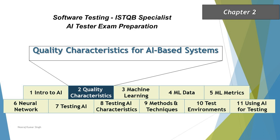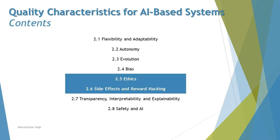Hello friends and greetings for the day. Welcome back to another tutorial on our ISTQB AI tester certification. We are in chapter 2 talking about the quality characteristics for AI-based systems, and as part of today's tutorial we'll be jumping on to the next set of topics: 2.5 Ethics and 2.6 which includes side effects and reward hacking for AI-based systems.